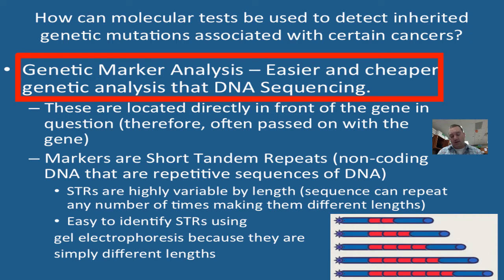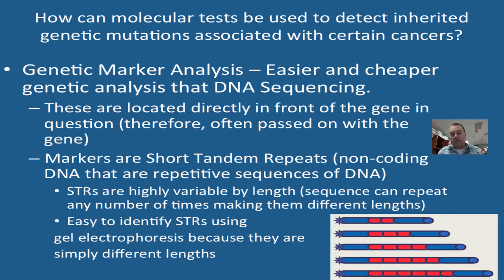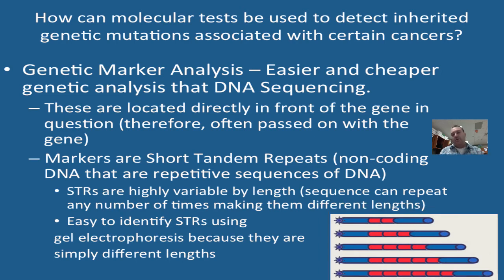We use marker analysis. Markers deal with a segment of DNA right in front of the gene, and they are therefore often passed on with the gene — used as a way to determine if you have the special allele. The markers are short tandem repeats (STRs), which are repetitive sequences of DNA that are highly variable in length, giving you different sizes of fragments. If you look at the graphic in the lower right-hand corner, the STRs are shown in red with different numbers of repeats and therefore different fragment sizes — perfect for gel electrophoresis.